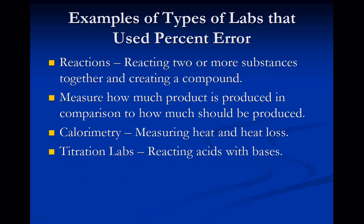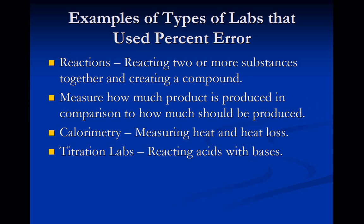Examples of types of labs that use percent error: reaction labs especially, where you react two or more substances together and create a compound. They measure how much product is produced in comparison to how much should be produced. For example, if you should get 100 grams of product and you only get 85, there's some kind of percent error. There are different reasons percent error comes about, whether it be faulty measurements, not cleaning equipment, or bad lab conditions.